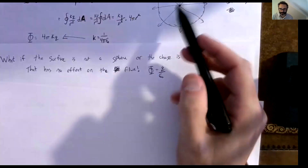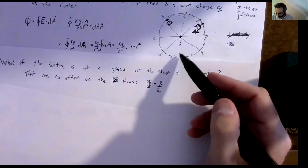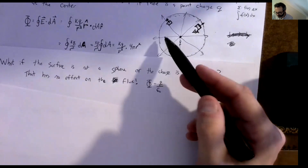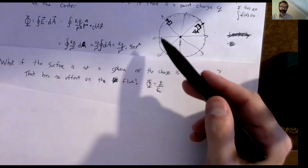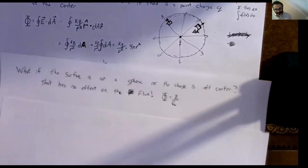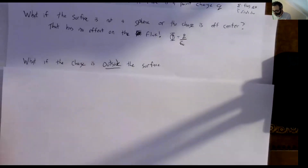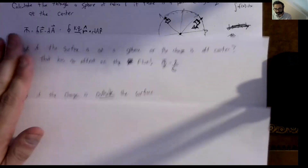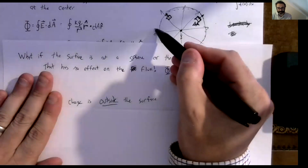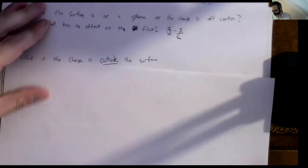We call these Gaussian surfaces — they're generally imaginary surfaces just for the purpose of calculating the electric flux through them. Now, another situation: what if instead of moving the charge around inside the sphere or changing the shape, we bring the charge outside the surface? Is that going to change the flux through the sphere?